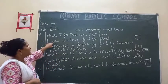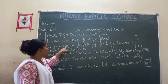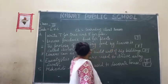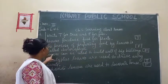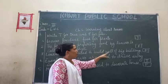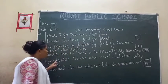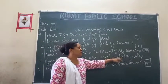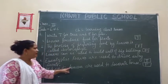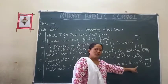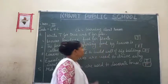Remember: Number 1, leaves produce food for plants — True. Number 2, the process of preparing food by leaves is called chlorophyll — No, wrong, False. Number 3, leaves can be used to build walls of a building — No, this is also False. Number 4, leaves are used to drive away insects — Yes, right, True. Number 5, Mehndi leaves are used to decorate house — this is also wrong. So F for number 5.